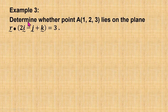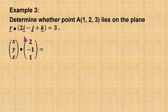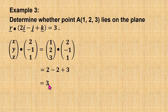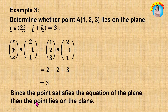For this example, let's determine whether the point A lies on the given plane. First, we convert the equation of the plane into column vector form. Then we substitute the coordinates of the point and compute the dot product. The result is equal to 3, which satisfies the equation of the plane. So we conclude that the point lies on the plane.